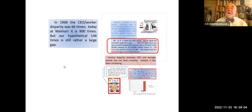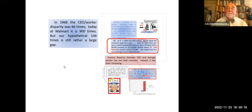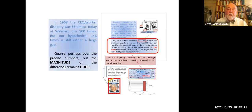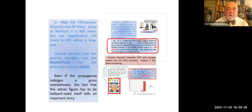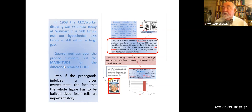In 1968, the disparity between CEO and worker was 66 to 1. Today it's 900 — Walmart's CEO earns 900 times what the associate earns. But our hypothetical 146 times is still a large gap. Even if one quarrels over the precise numbers, the magnitude of this difference remains huge. That's an important one to notice. Even if the propaganda indulges a gross overestimate, the whole figure has to be ballpark-sized up to tell a significant story.